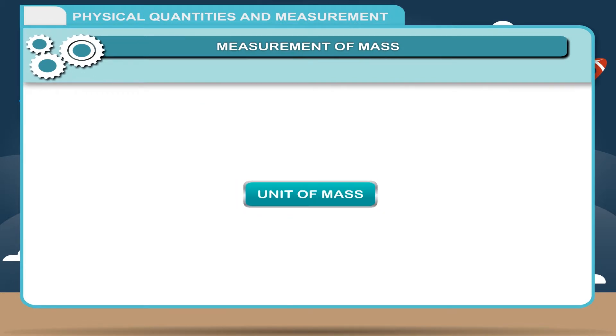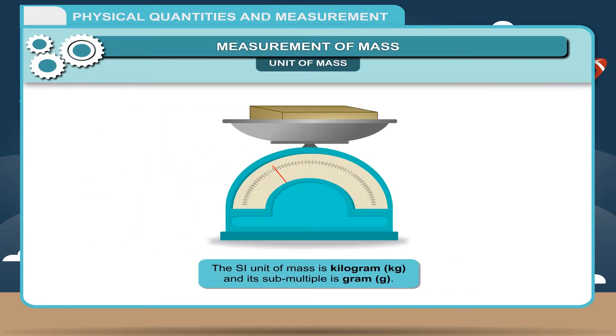Unit of Mass. The SI unit of mass is kilogram (kg) and its submultiple is gram (g).